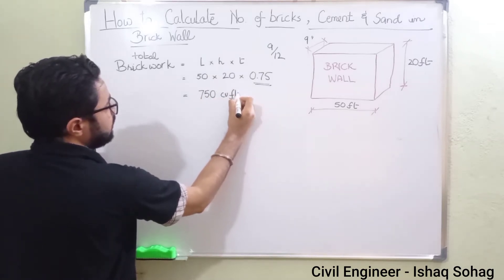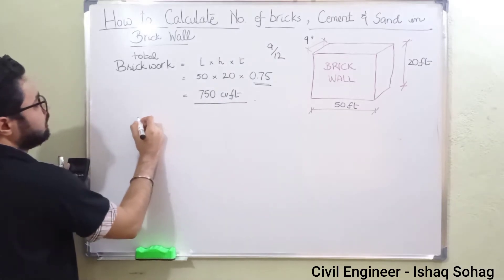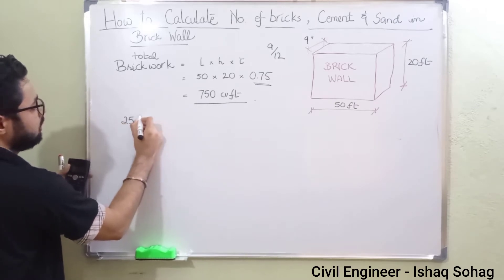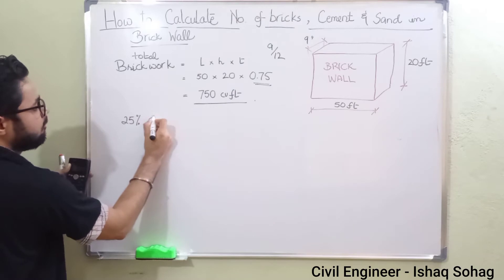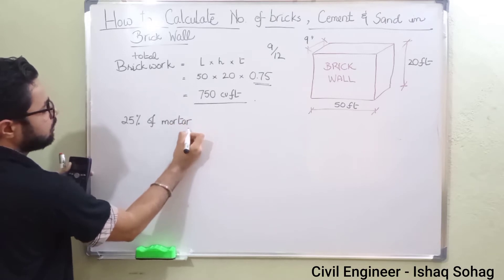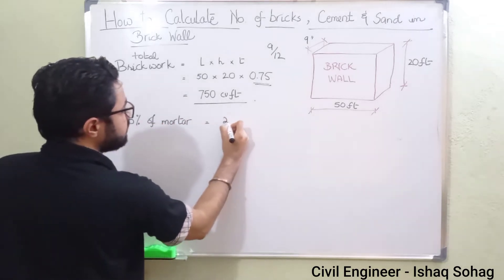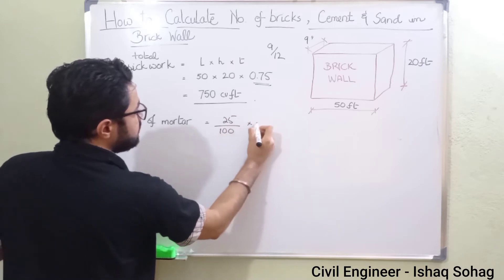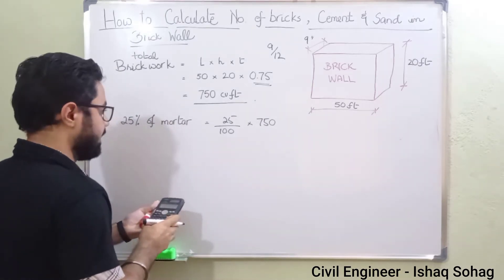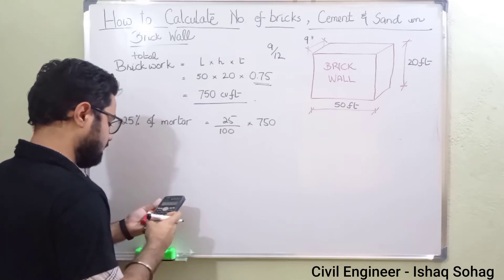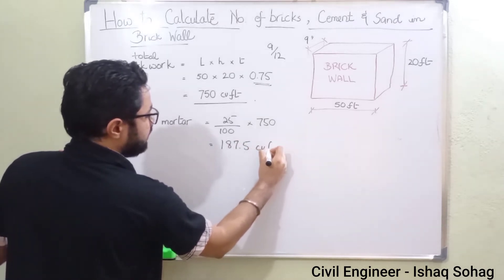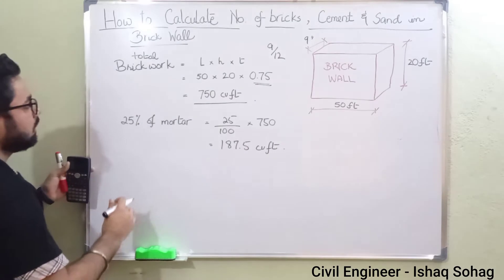Now from this volume we have to take out 25%, because 25 percent represents the mortar. So 25 divided by 100 times 750 gives us 187.5 cubic feet. That is our volume of mortar.